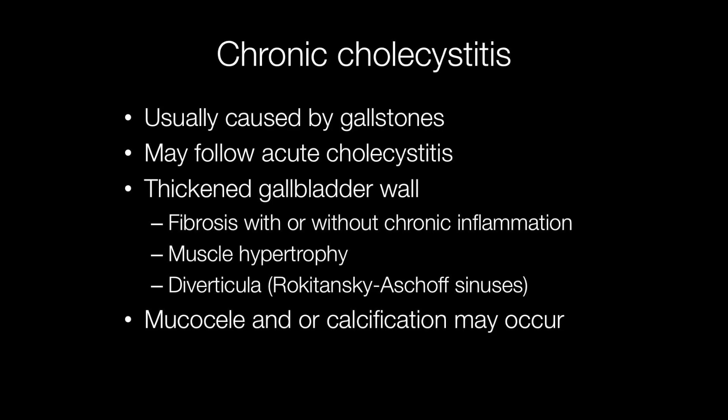Chronic cholecystitis is usually caused by gallstones and may follow acute cholecystitis. The gallbladder shows characteristic features including fibrosis of the gallbladder wall with or without chronic inflammation, and the muscle of the gallbladder wall becomes hypertrophied or thickened.